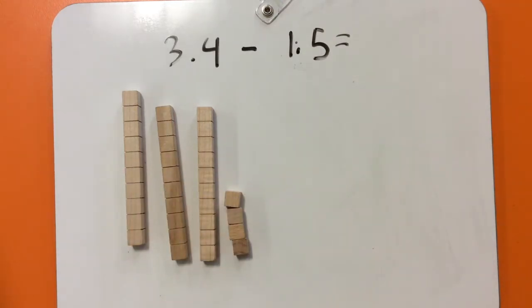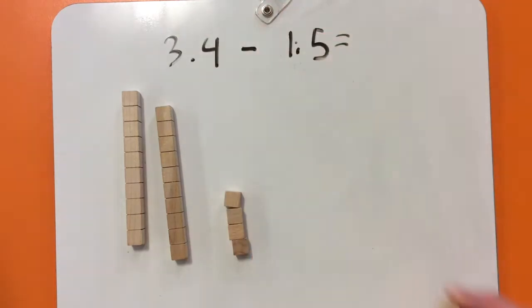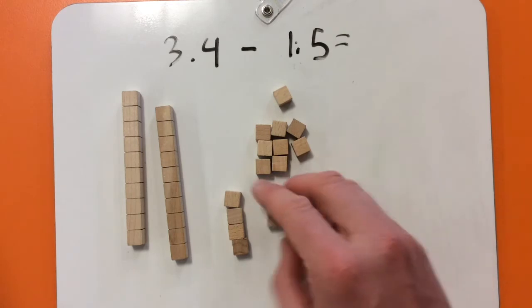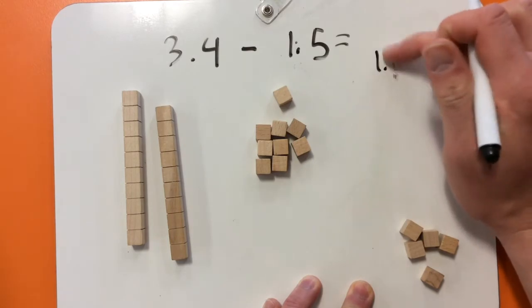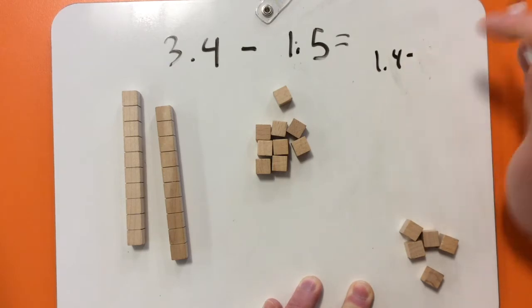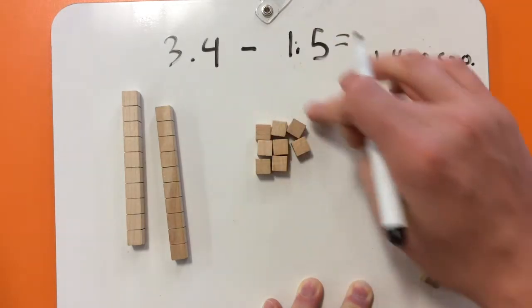So that means I need to take away one whole, one, so one of these, and five of these. Problem is, I don't have five of these, I only have four. So I'm going to need to trade one of these for ten more tenths. So now that I've got ten and four, I've got 14, I can take away my five. So that's 1.4, take away 0.5, and that equals 0.9.